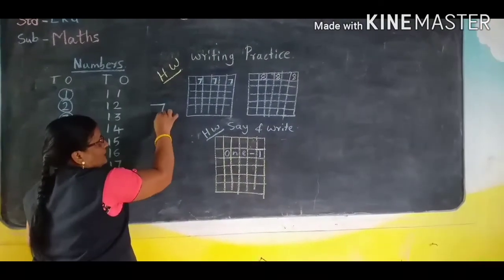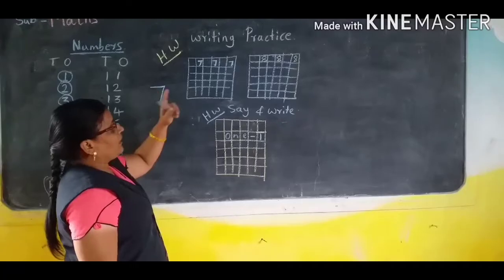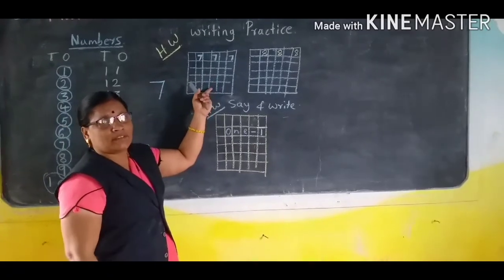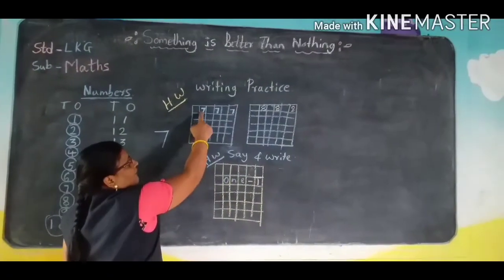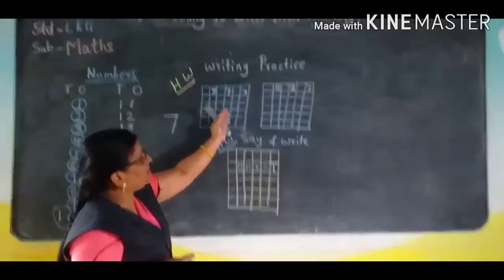Sleeping line and standing. Seven, like this time, full place you have to write. Write here seven and one box you have to leave, write the seven.